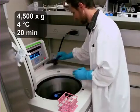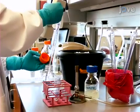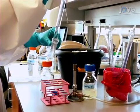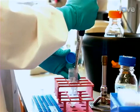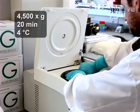Resuspend the pellet in 35 milliliters of cold PBS and repeat the centrifugation. After resuspending the pellet in 1 milliliter of cold PBS, transfer the solution to a sterile 2 milliliter micro tube and spin again.